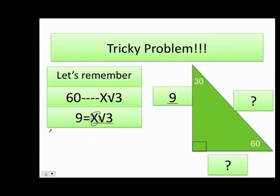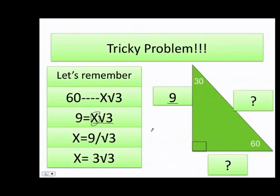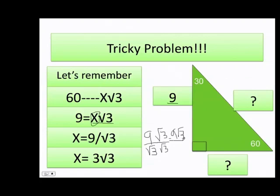I want the value of x by itself, so I get rid of the square root of 3 by dividing both sides by √3. Now I simplify that radical — remember I can never have a radical in the denominator, so I rationalize by multiplying numerator and denominator by √3. That gives me 9√3 on top, and √3 times √3 equals √9, which is 3 on the bottom. I can cancel one 9 with the 3, and that equals 3 times the square root of 3.